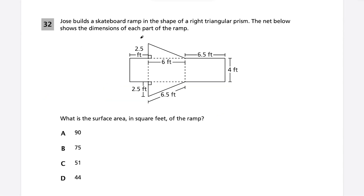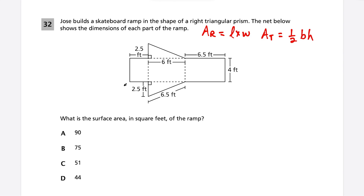Question 32: Jose builds a skateboard ramp in the shape of a right triangular prism. The net shows dimensions of each part. We want the surface area. We need to find the area of all shapes and add them up — three rectangles and two right triangles. Area of a rectangle is length times width; area of a triangle is ½ base times height. We identify missing values: one distance is 4 feet, another is 6 feet.